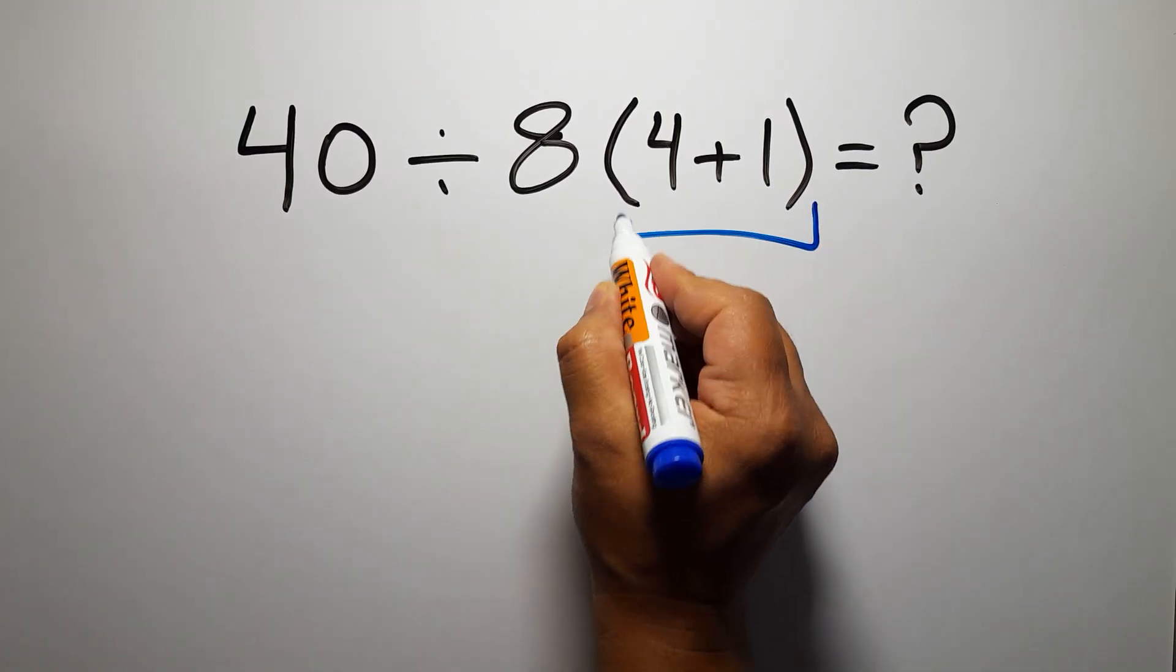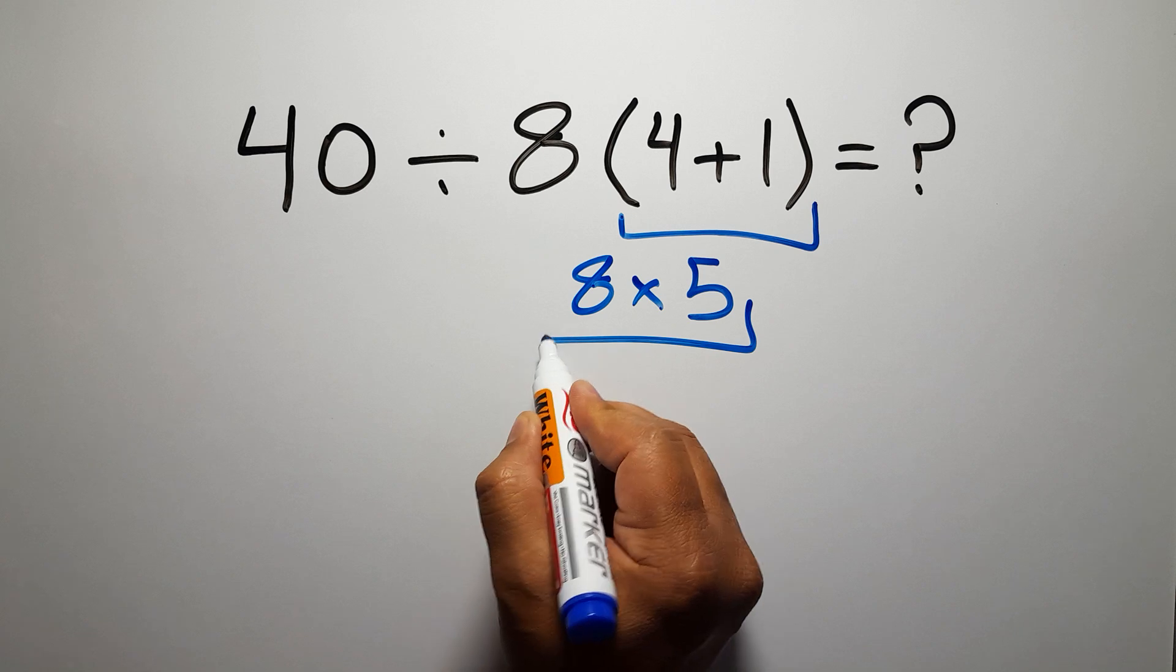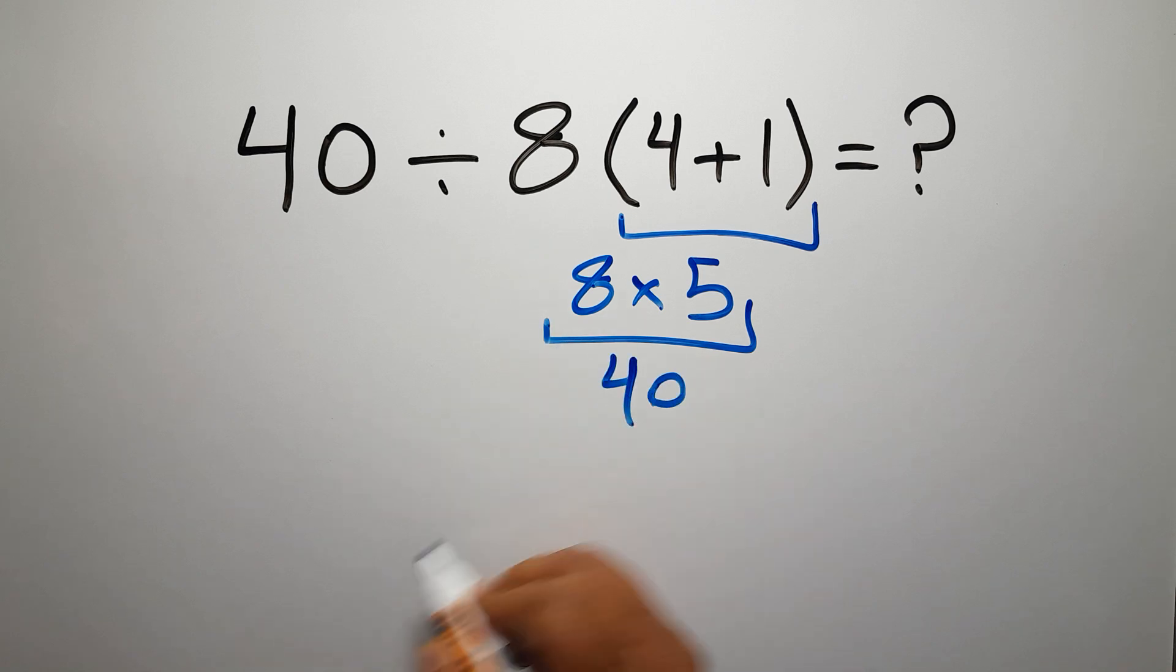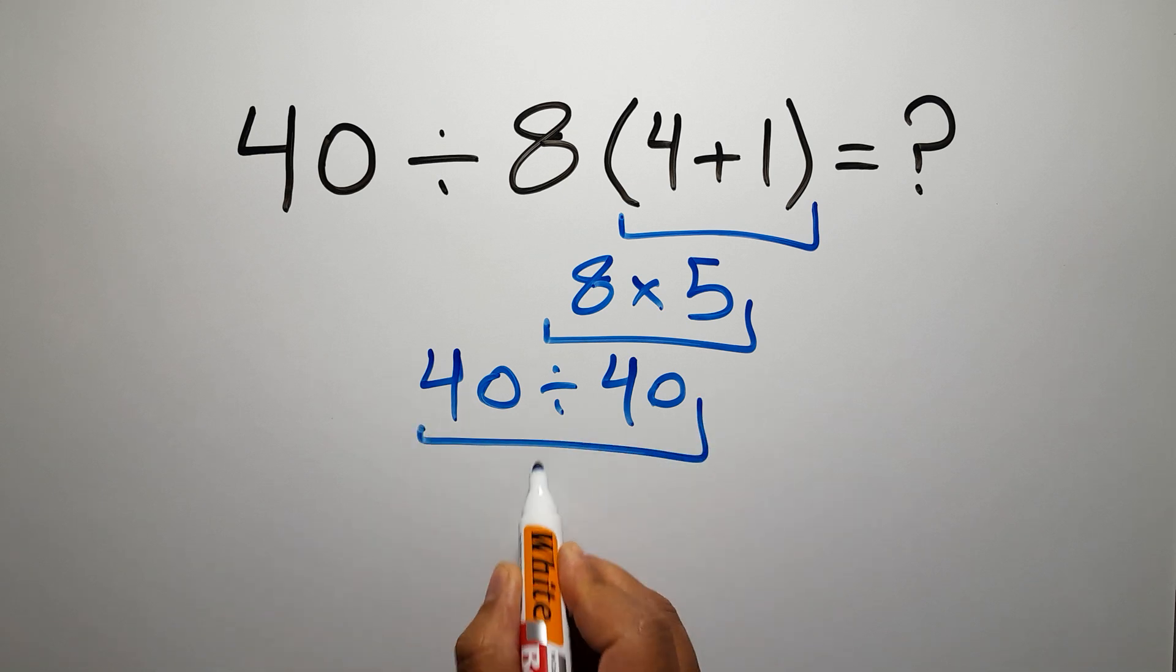4 plus 1 gives us 5, and 8 times 5 equals 40, so 40 divided by 40 equals 1. But this answer is not correct.